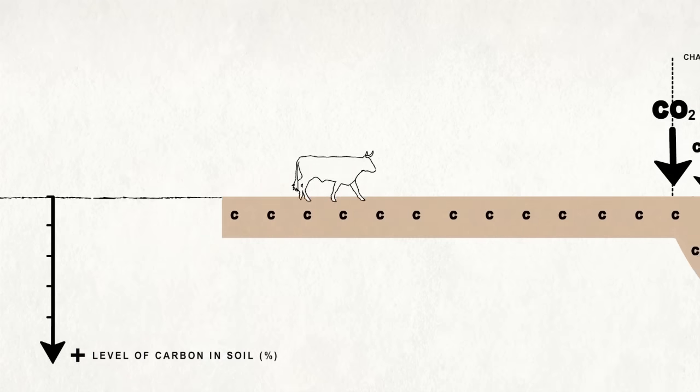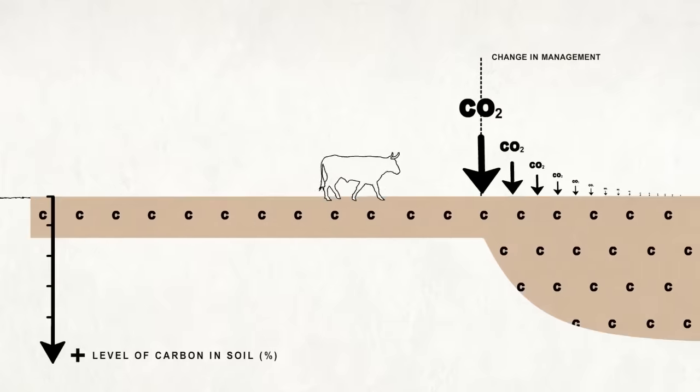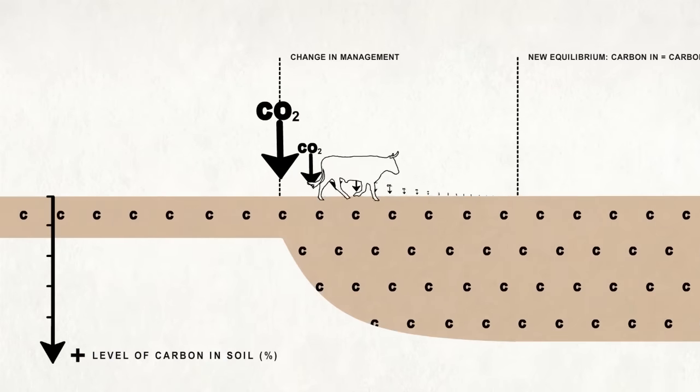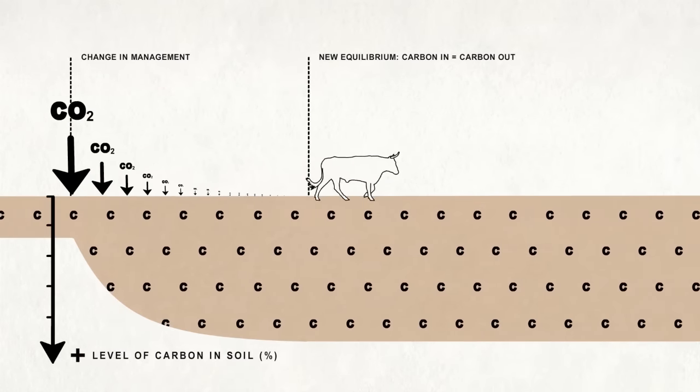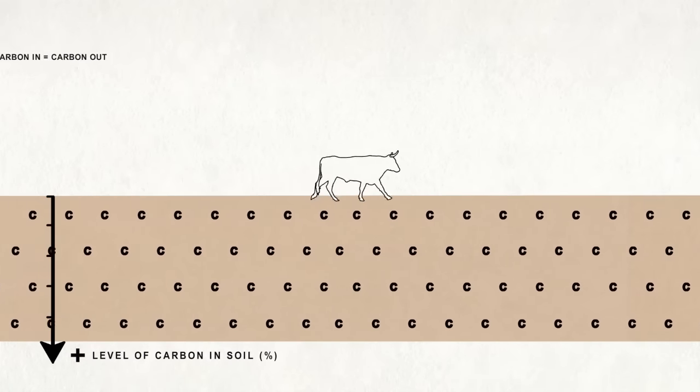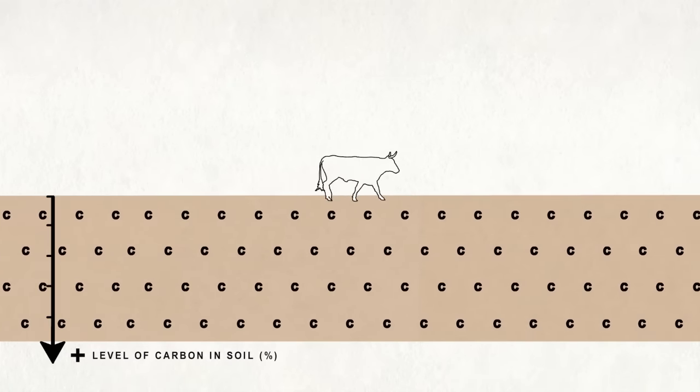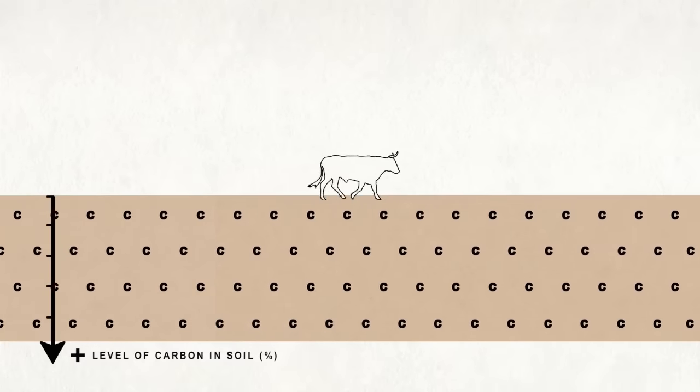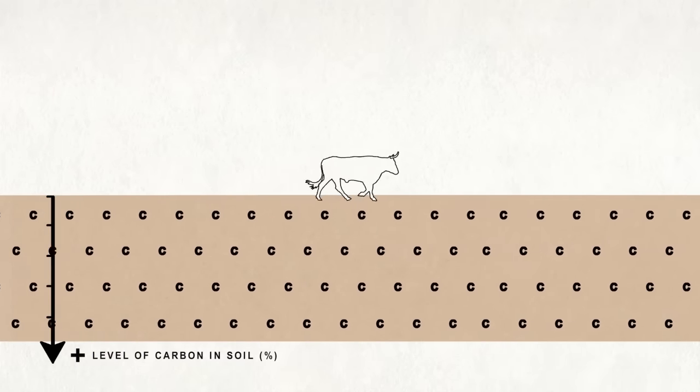Even where changes to grazing management do lead to sequestration, within decades of introducing the change in grazing, a new equilibrium is achieved between carbon entering and leaving the soil. And so, the rate of sequestration falls back to a level close to zero.